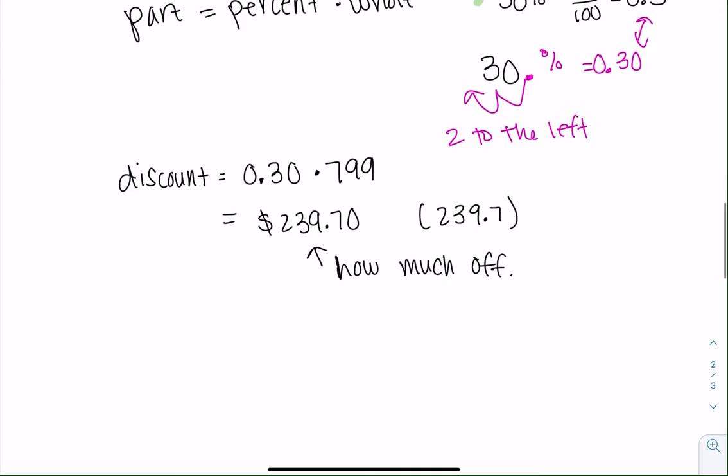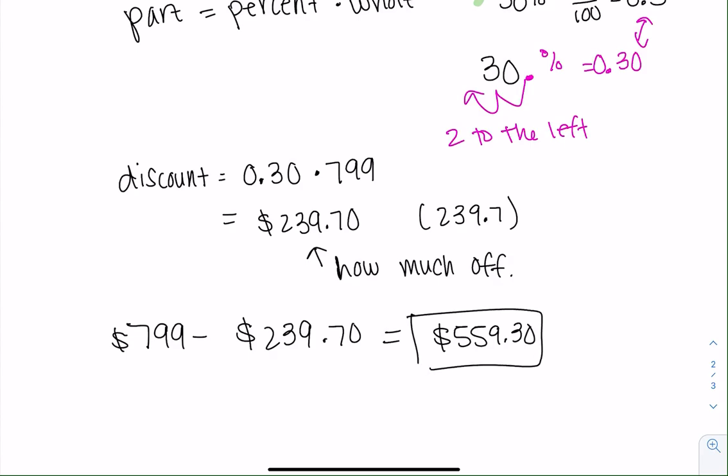So we'll just go ahead and subtract that, right? Because discounts are subtractions. We take the total purchase price of $799, take away the $239.70, and I think I got $559.30. Cool. So after this, there's some practice, but maybe if you still have questions, let me know before you attempt the practice. Yeah, so I hope this helps.